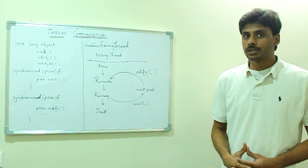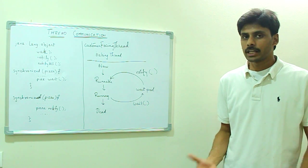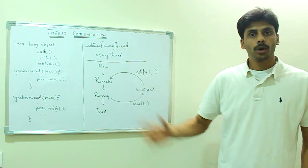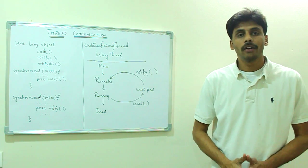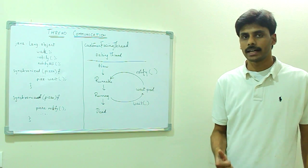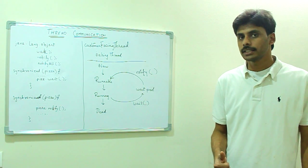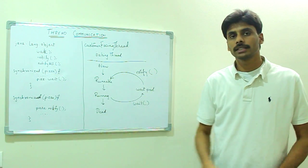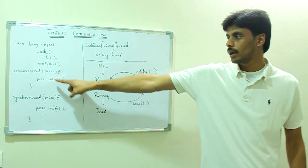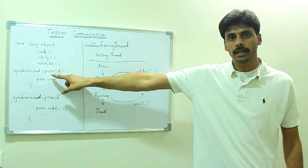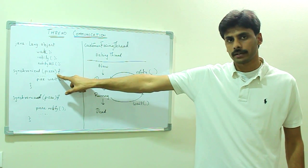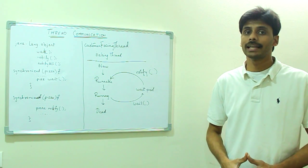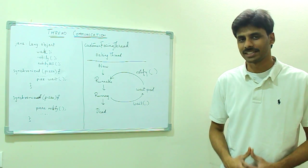There are a few rules which guide thread communication. That is, wait, notify, and notifyAll should always be invoked from a synchronized context — they should be called either from a synchronized block or a synchronized method and they should have the lock on that particular object. If not, the JVM will throw an IllegalMonitorStateException.